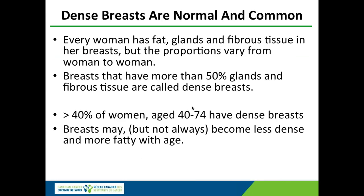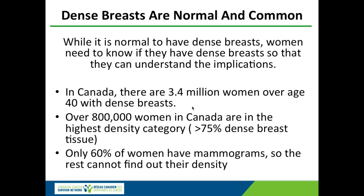Dense breasts are common, and they're normal. Every woman has fat, glands, and fibrous tissue in her breasts. Breasts that are more than 50% dense are called dense breasts, and more than 40% of women over the age of 40 have dense breasts. In Canada, there are 3.4 million women over the age of 40 with dense breasts, and over 800,000 women in Canada are in the highest category — greater than 75% density. The only way to know if you have dense breasts is on a mammogram. You can't tell by feel or look.